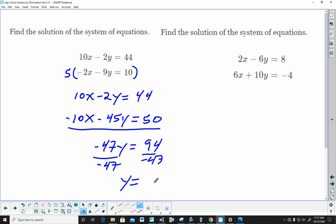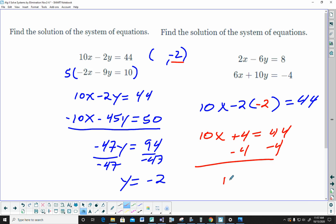Divide by negative 47, and you get y is equal to negative 2. That's going to give you your y value. Now, I'll do this once and then I won't for the rest of them because it takes time and I want to keep the video short. The y is negative 2, I'll just use the first one. So 10x minus 2 times whatever y is. I'm going to fill in the y value of negative 2 because that's what it was. So I get 10x plus 4 is equal to 44. Subtract the 4 and you get 10x is equal to 40, and divide by 10. You get x is equal to 4.